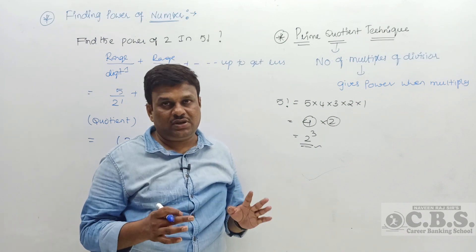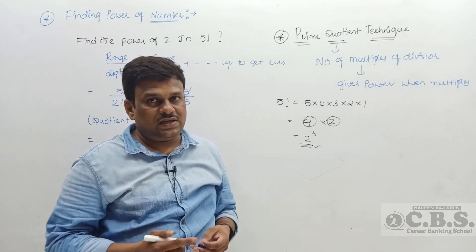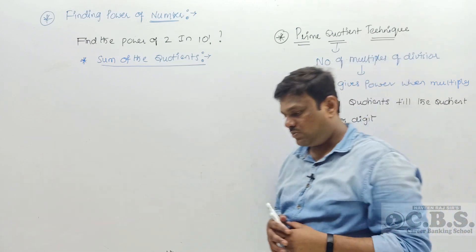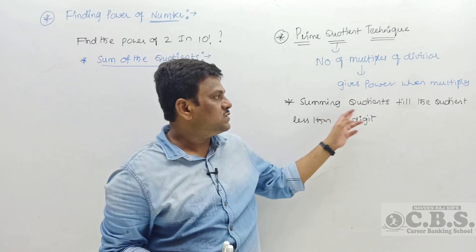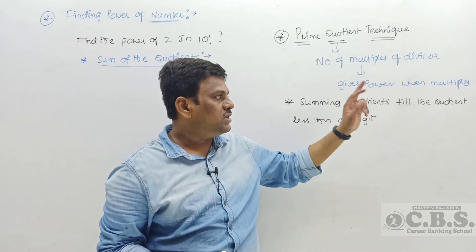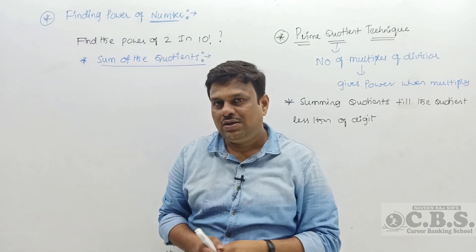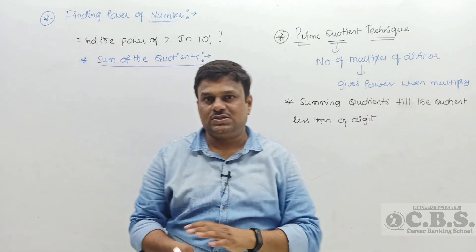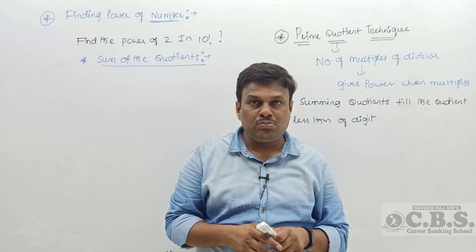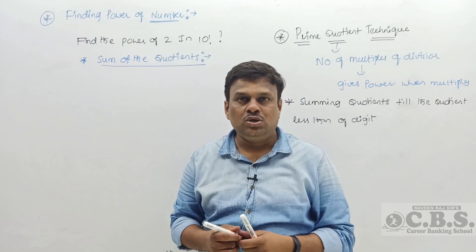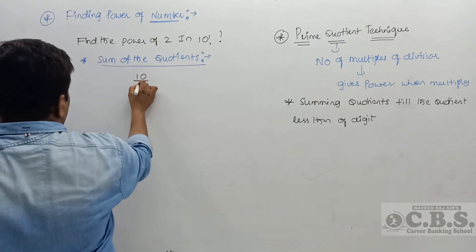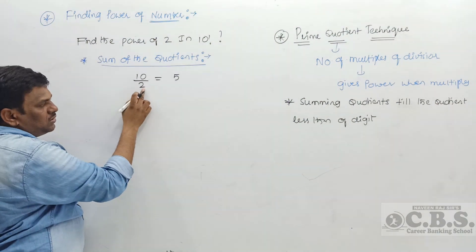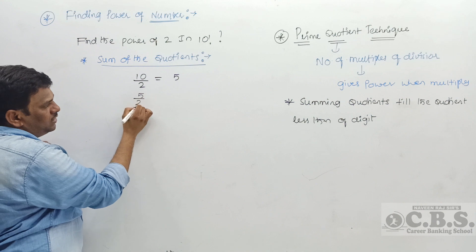For larger factorials there is an easier approach called the sum of quotients technique: keep dividing the previous quotient by the digit until the quotient becomes less than the digit, then sum all quotients. For 10!: 10 ÷ 2 = 5 (quotient); 5 is not less than 2, so continue. 5 ÷ 2 = 2 (quotient); 2 is not less than 2, so continue.